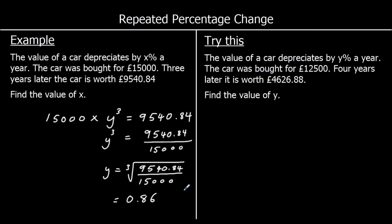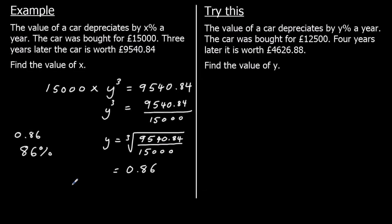So if our multiplier is 0.86, what is our percentage decrease? 0.86 as a percentage multiplied by 100 is 86%. So each year we've got 86% of what we had the previous year. The percentage decrease is 100% minus 86%, which is 14%. So X, our percentage decrease, is 14%.